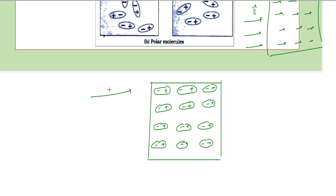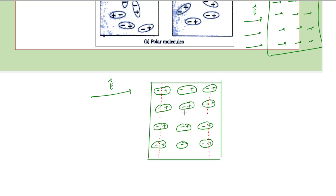In the presence of an externally applied field, one end of the dielectric has more negative charge and the other end contains more positive charge. The interior charges balance each other out, so what remains is a region containing negative charge and a region containing positive charge at the surfaces. This results in an inbuilt internal field, and because of the applied field we get an internal field directed from plus to minus.